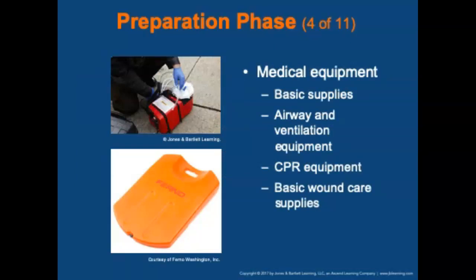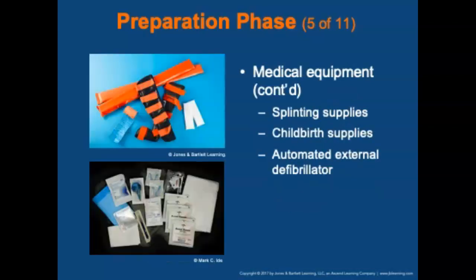Medical equipment includes basic supplies such as disposable gloves and sharps, airway and ventilation equipment, basic wound care supplies, splinting and childbirth supplies, automated external defibrillators, patient transfer equipment, medications, and communication equipment. Also included are one portable and one mounted suction unit, large bore suction tubing, portable oxygen supply, mounted oxygen unit, CPR equipment and CPR board, basic wound care supplies including trauma shears, gauze, abdominal sterile dressings, universal trauma dressings, tourniquets, and adhesive bandages.